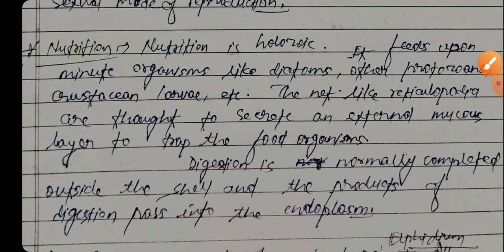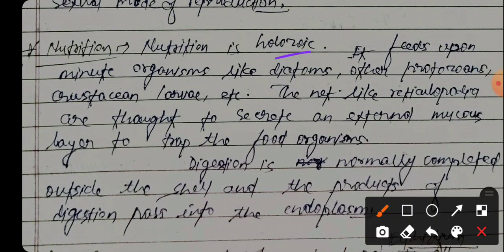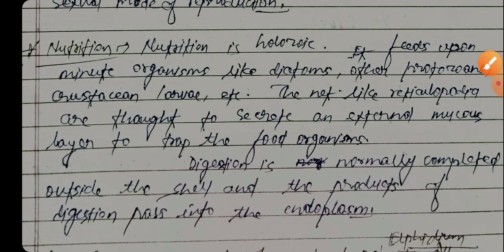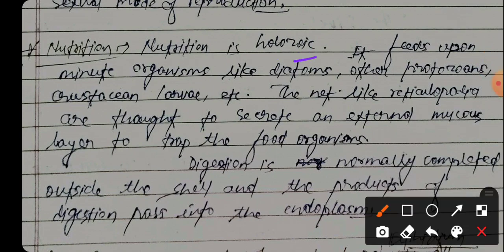Nutrition is holozoic. It feeds upon minor organisms like diatoms, other protozoans, and crustacean larvae. This is holozoic nutrition — it feeds on small organisms such as diatoms, other protozoans, and crustacean larvae.